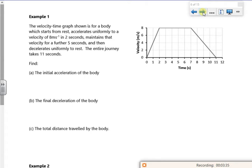So I've got a velocity time graph for a body which starts at rest. So its velocity is zero. It accelerates uniformly to eight metres per second over two seconds. So that's that part of it. And then maintains that velocity for a further five seconds. Yep, it sure does. Because it's nice and flat, the velocity hasn't changed. And then it decelerates uniformly to rest by eleven seconds.